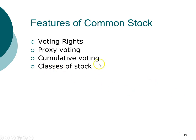The different classes of stock represent different voting rights. A company can issue two classes of stock — for example, Class A stock will carry a voting right of one vote per share, while a Class C stock can carry 10 votes per share or 100 votes per share. This allows the original founder of the firm to have more voting rights for the same number of shares they own.